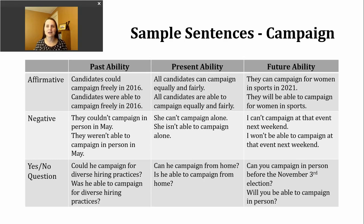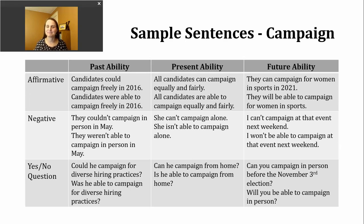Next, let's look at present ability. To make a sentence about ability at the present moment, we can use the modal can and our base verb, or we use a present form of be — am, is, or are — and then able to and the base verb. Here are two affirmative examples: All candidates can campaign equally and fairly. All candidates are able to campaign equally and fairly. If I want to make a negative sentence about lack of ability in the present, I insert not after the modal can or after my be verb: She can't campaign alone. She isn't able to campaign alone.